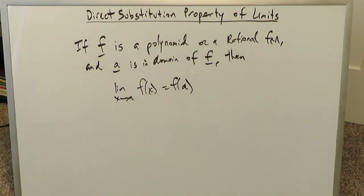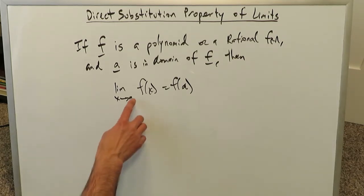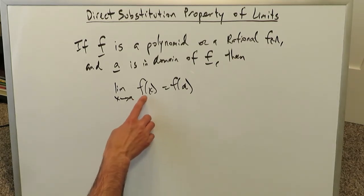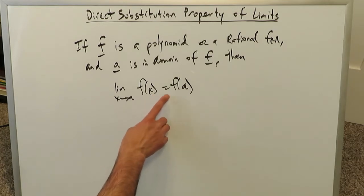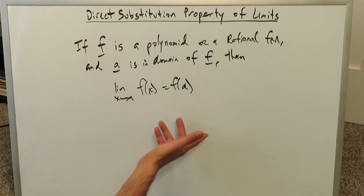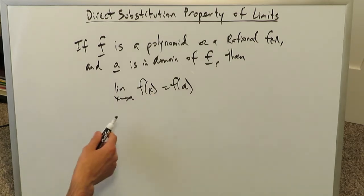What does that mean? It means you could literally plug in the value a into your polynomial, and the value that you get is your answer to your limit.